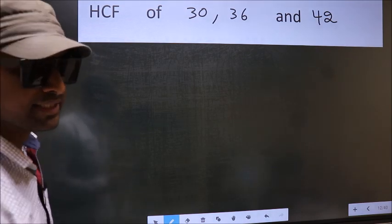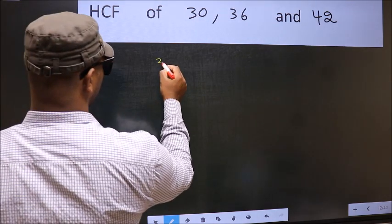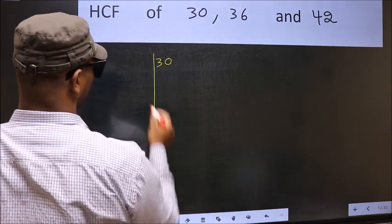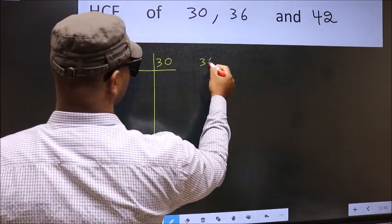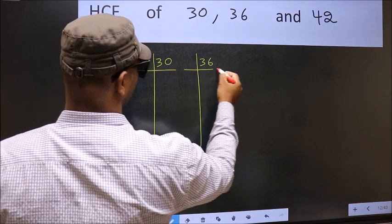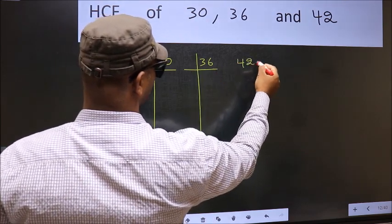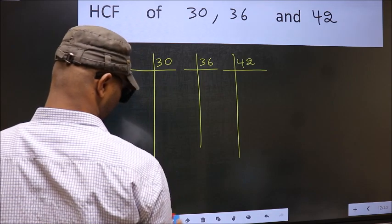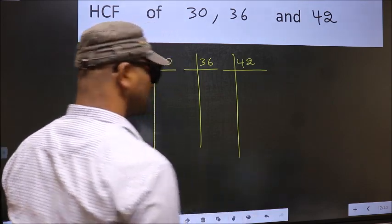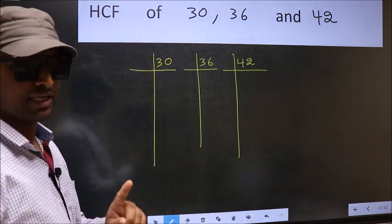What I mean is 30, 36 and 42. This is your step 1.